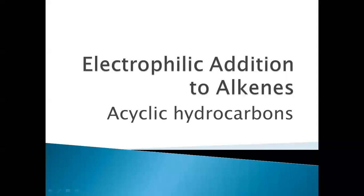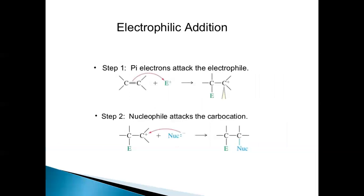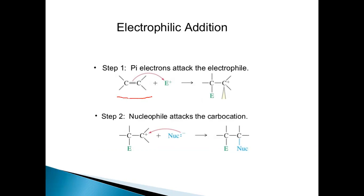In this video, I'm going to discuss electrophilic addition to alkenes, under the chapter acyclic hydrocarbons — chapter 5 from the degree first semester syllabus. The whole chapter has been uploaded to my YouTube channel. Now, alkenes are unsaturated compounds, also called olefins, having one or more double bonds. Because of the presence of the double bond, they are electron rich.